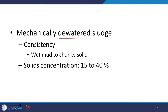Mechanically dewatered sludge — the one we just looked at — we know the consistency; it is like wet mud or chunky solid. What we saw as output from the belt press is somewhere in between. For wet mud, solids typically 15 percent; for chunky solids, 40 percent. Ours would have been somewhere in between.